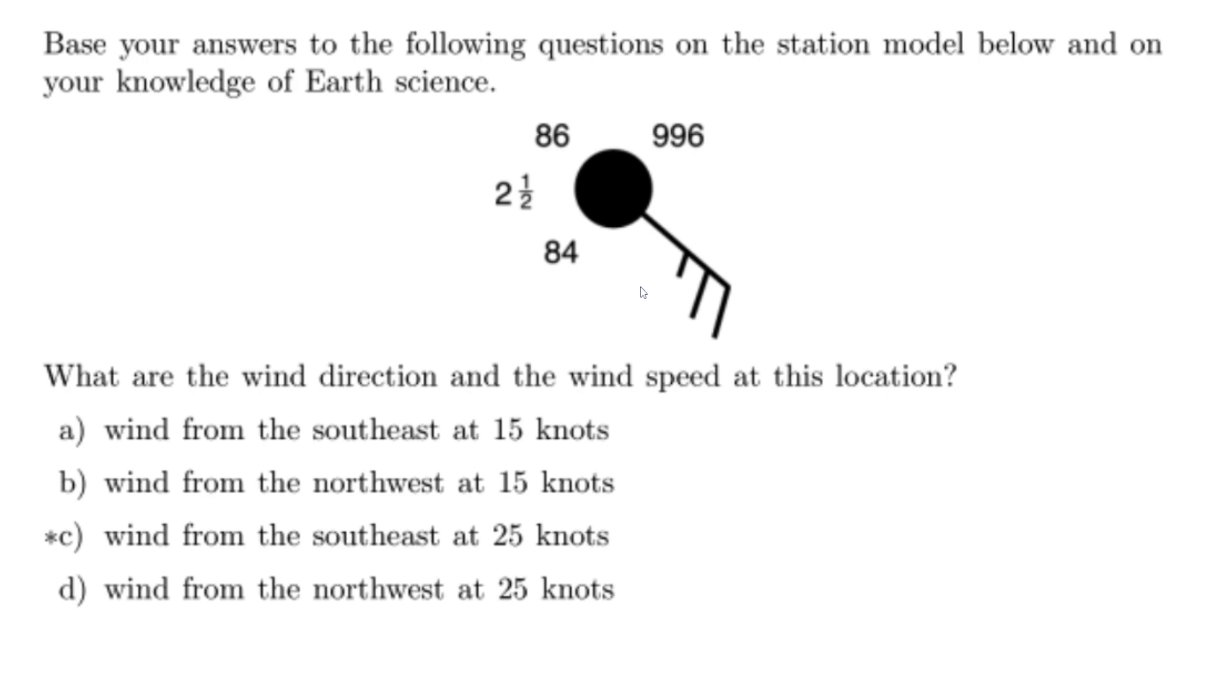The correct answer is C. Wind is coming from the southeast at 25 knots. Remember, the long line, the long stick, shows where the wind is coming from. In this case, the southeast. And the smaller lines or feathers represent the wind speed in knots. So remember, the bigger lines are 10. The smaller one is 5. 10 plus 10 plus 5 is 25 knots.